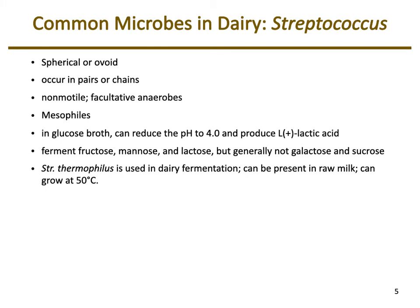Looking at common microbes found in dairy: Streptococcus forms chains of spheres, is non-motile, facultatively anaerobic, and is a mesophile — it likes the body temperature of mammals. It is known to produce lactic acid, which reduces the pH and makes conditions unfavorable for some pathogenic strains. Streptococcus can ferment fructose, mannose, and lactose as sugar sources.